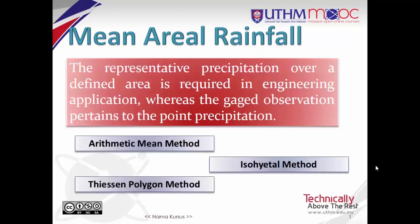The reliability of rainfall measured at one gauge in representing the average depth over a surrounding area is a function of the distance from the gauge to the center of the representative area, the size of the area, topography, the nature of the rainfall of concern, and local storm pattern characteristics.